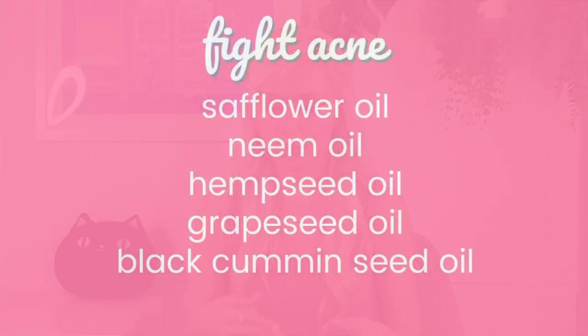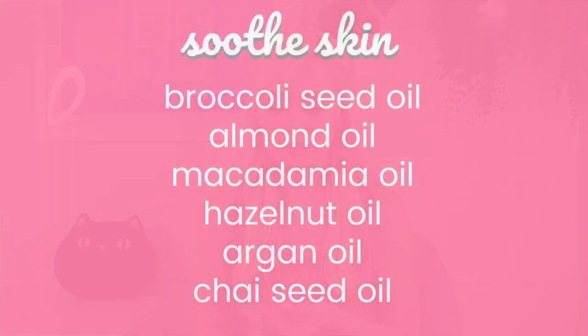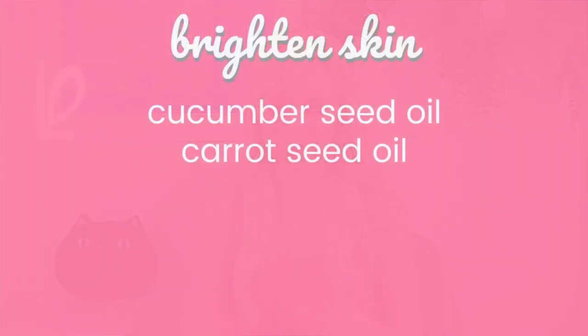To fight acne, you could use safflower oil, neem oil, hemp seed oil, grape seed oil, and black cumin seed oil. To soothe skin, you can use broccoli seed oil, almond oil, macadamia oil, hazelnut oil, argan oil, and chia seed oil. And to help brighten your skin, you can use cucumber seed oil or carrot seed oil.